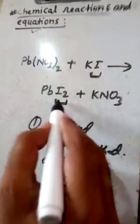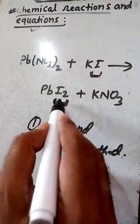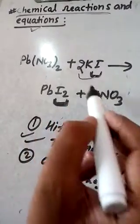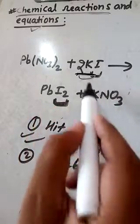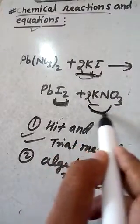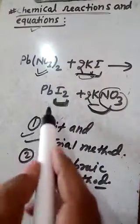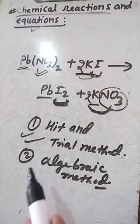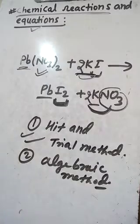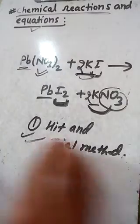Using the hit and trial method: the number of iodine atoms on the left is 1 and on the right is 2, so we multiply KI by 2 to balance iodine. Then the number of potassium atoms on the left becomes 2 but on the right is 1, so we multiply KNO3 by 2. After that, nitrate is 2 on both sides and lead is 1 on both sides, so the equation is now balanced.